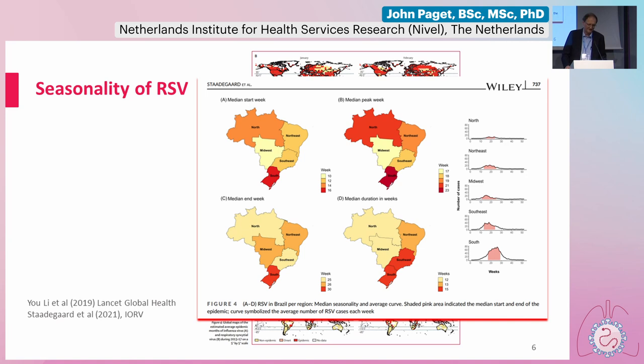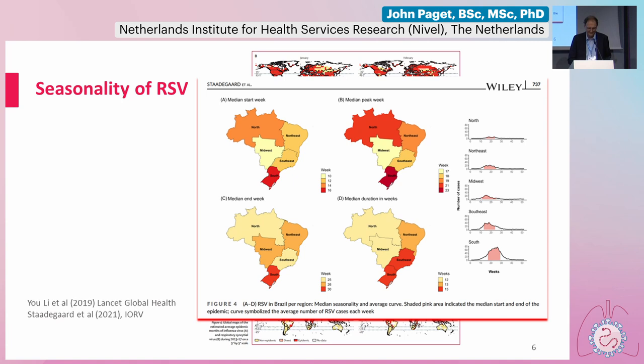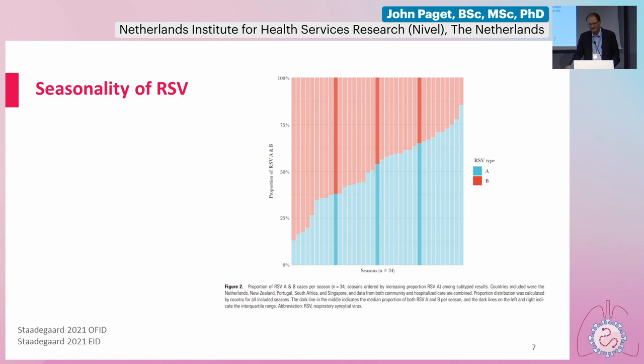It's important to note that RSV in large countries doesn't affect the whole country at the same time. There are various studies in the US which have shown that it starts in Florida and then spreads to the rest of the country. Data from Brazil also shows it starts in the middle of the country, spreads out, and ends in the southern part of Brazil. In larger countries the timing can vary, and in Russia it's a similar situation.